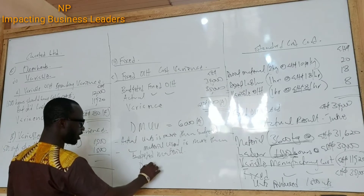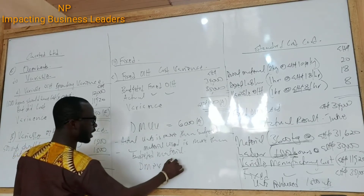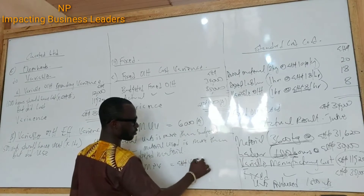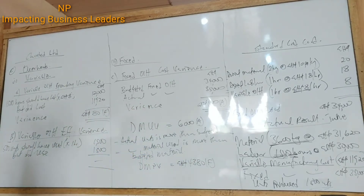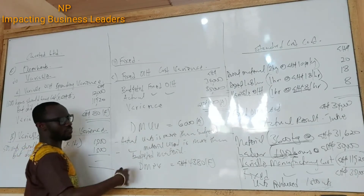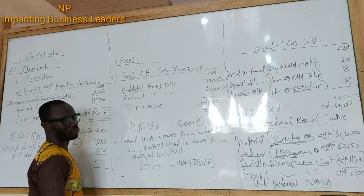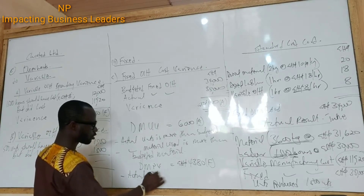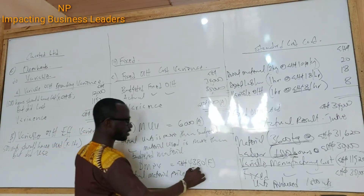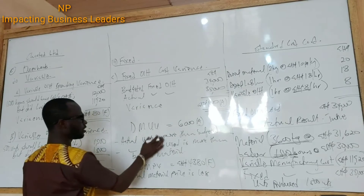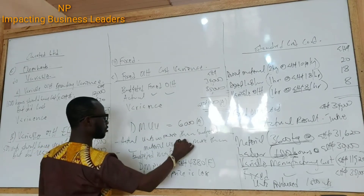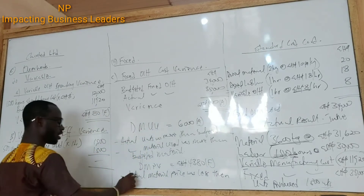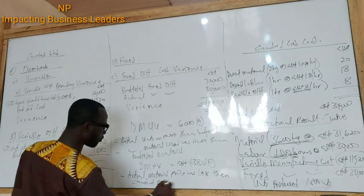The second one is direct material price variance. Why do we have favorable for the price variance? When your price variance is favorable, it means you are paying less than what you are supposed to pay. So it could mean that the actual material price was less than the standard price. That could be the reason for the variance.